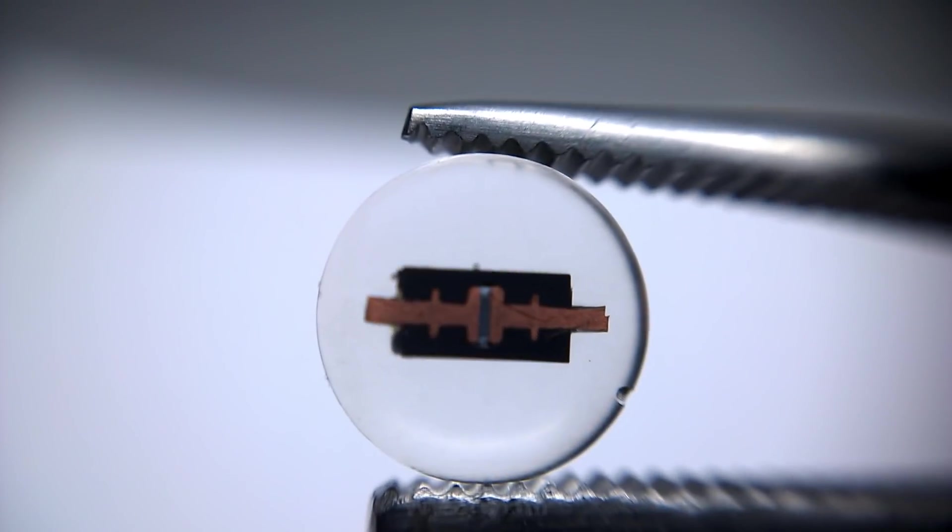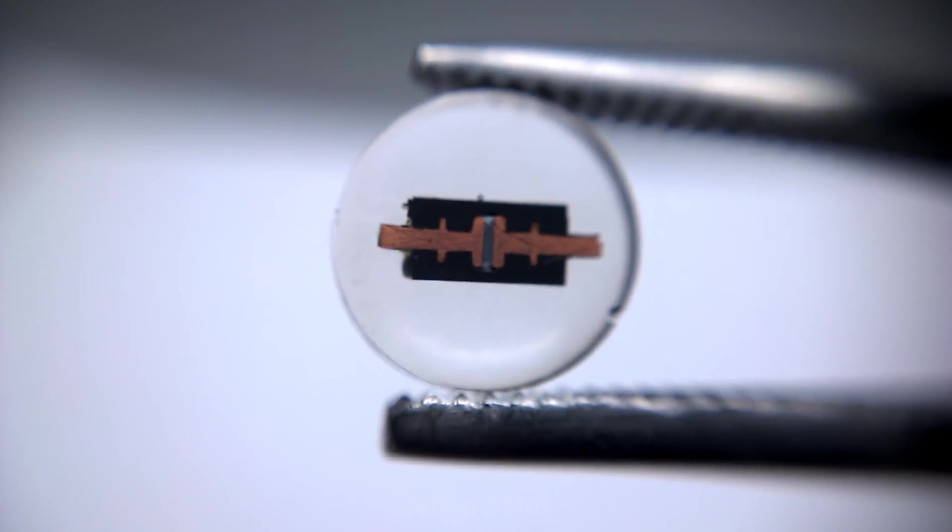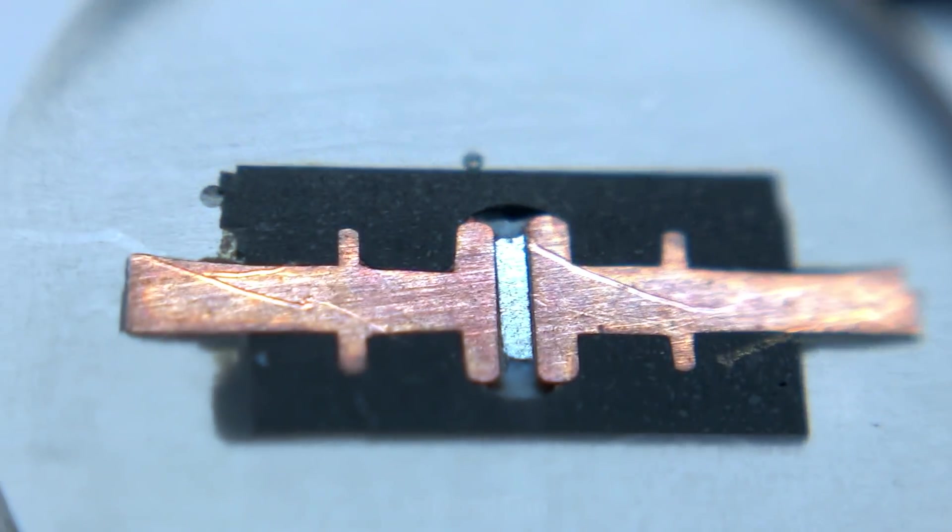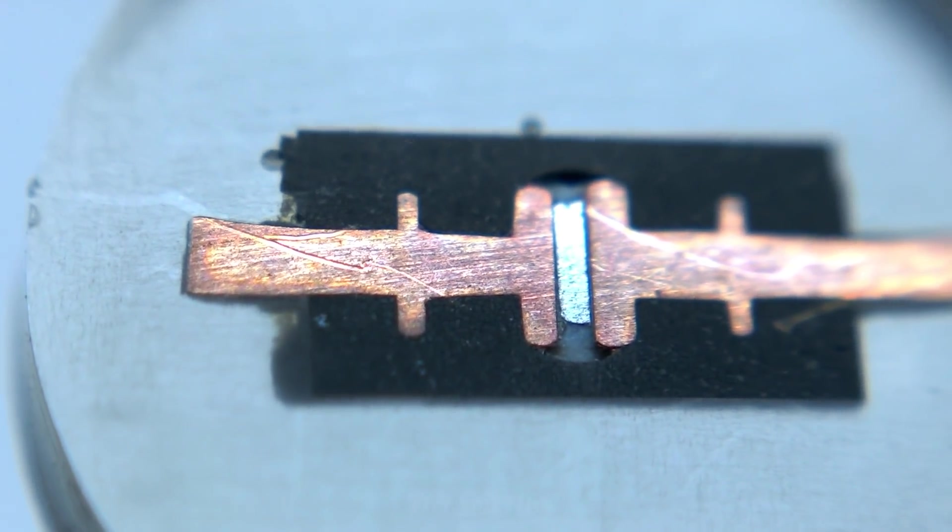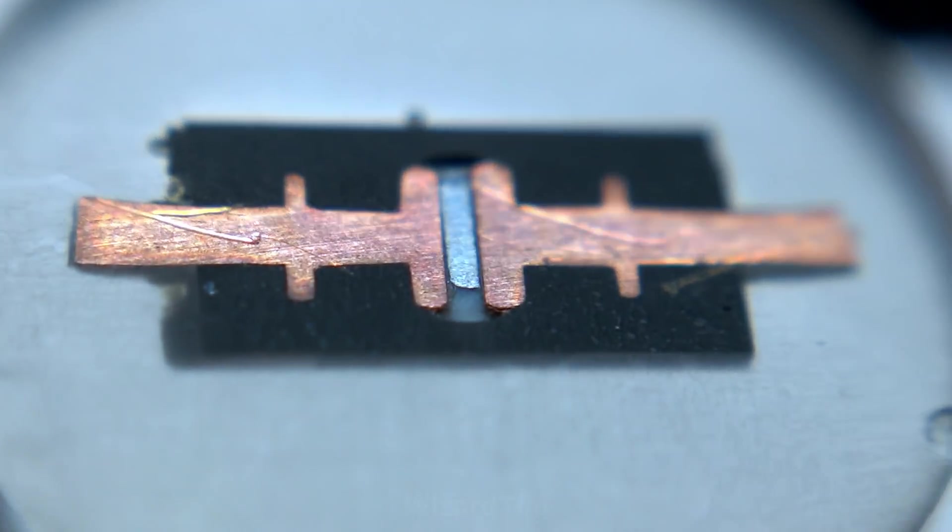Here is a common 1N4001 silicon diode. Here you can see the silicon junction in the middle with the two copper connections on either side.